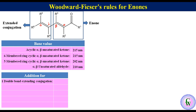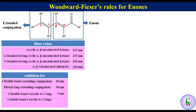Addition values are as follows: for a double bond extending conjugation, 30 nm; for a phenyl ring extending conjugation, 90 nm; for a double bond exocyclic to one ring, 5 nm; for one double bond exocyclic to two rings simultaneously, 10 nm; and for a homoannular diene, 39 nm.